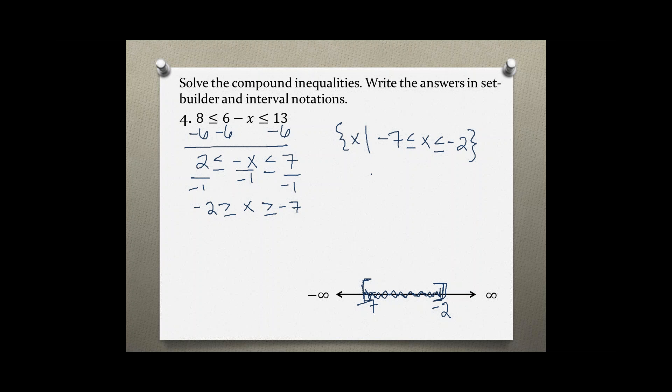And then in interval notation, we'll use a bracket, negative 7, comma, negative 2, close bracket.